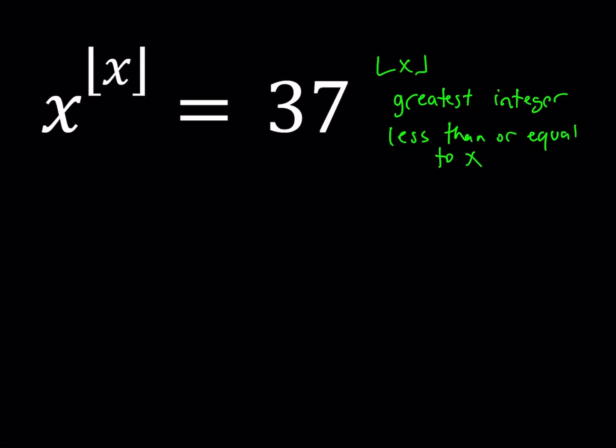A good example would be 3.14, which you can also replace with pi, would be 3. But if you have something like negative pi, this would be negative 3.14. We need to be careful about this because you're always rounding it down. So the answer is going to be negative 4 in this case, not negative 3.